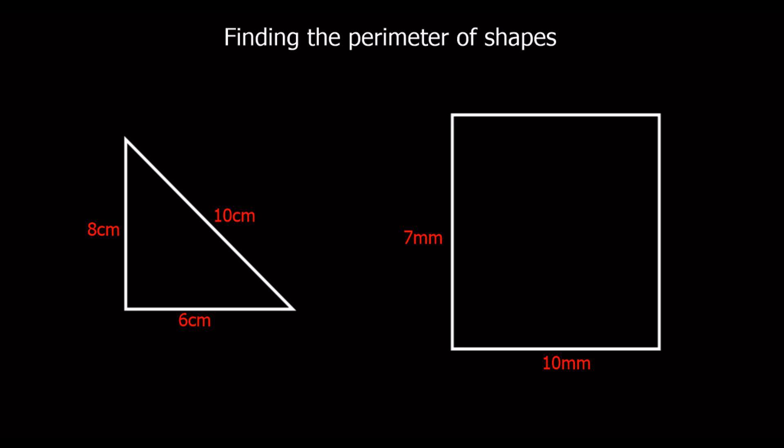When we're being asked to find the perimeter of a shape, we're being asked for the total length around the edge of the shape. So with the shape here, this triangle, what we've got to do is add up each of the lengths.